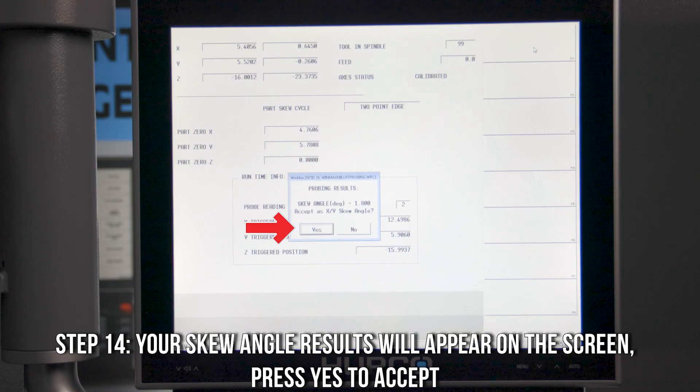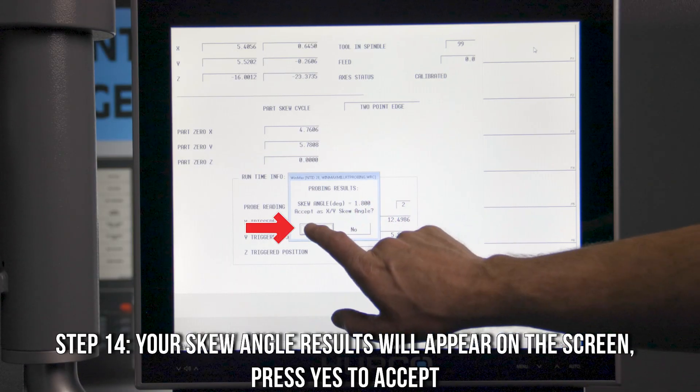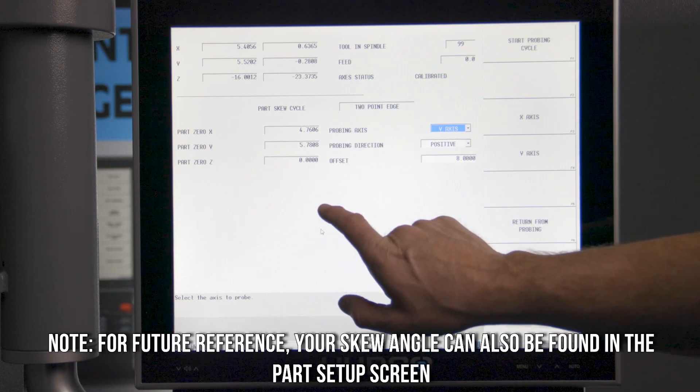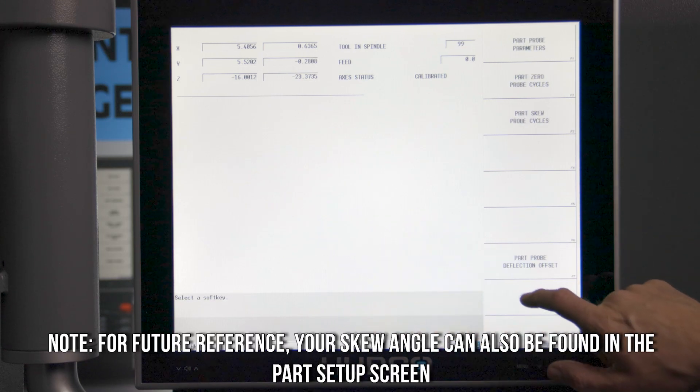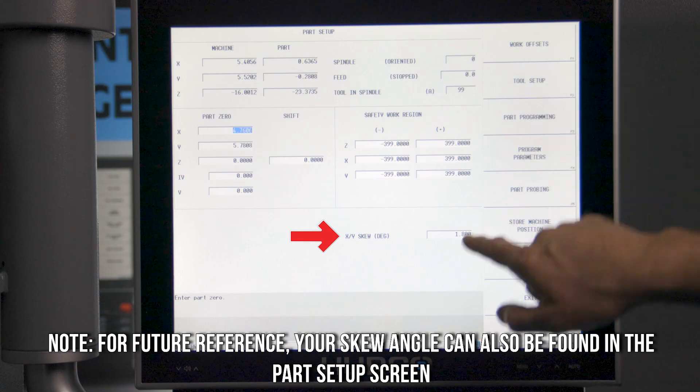Your skew angle results will appear on the screen. You're going to go ahead and hit Yes to accept them. And for future reference, you can also find your current skew angle in the part setup screen.